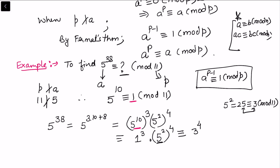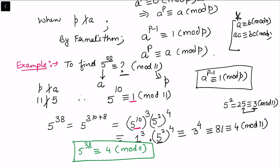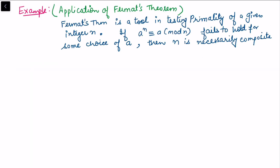So 5^38 ≡ 1^3 × 3^4 ≡ 3^4 (mod 11). Since 3^4 = 81, and 81 - 4 = 77 which is divisible by 11, we have 81 ≡ 4 (mod 11). Therefore 5^38 ≡ 4 (mod 11). Fermat's theorem helps reduce computational effort when solving congruences.